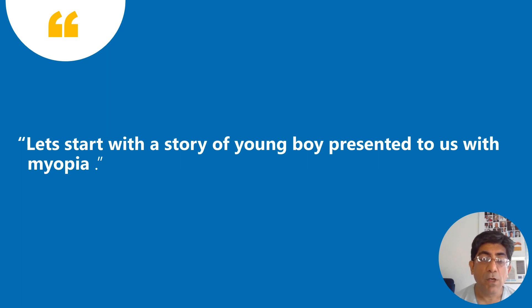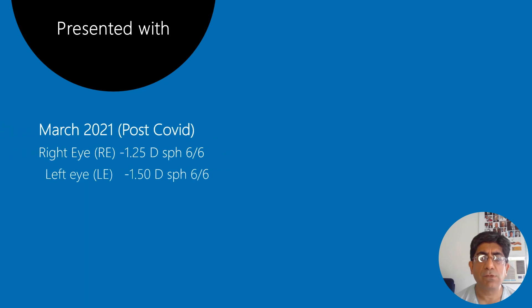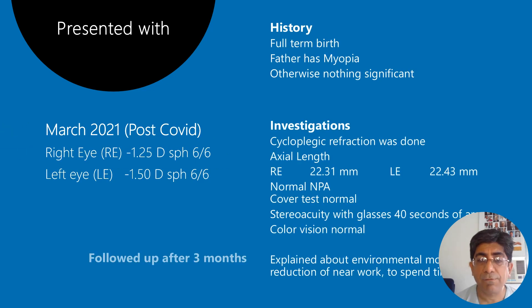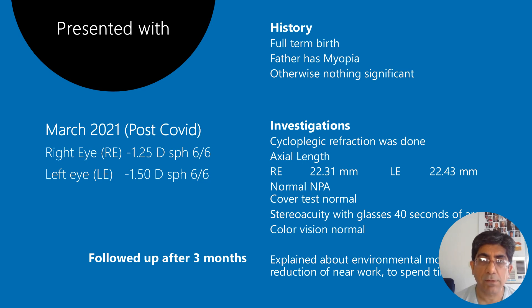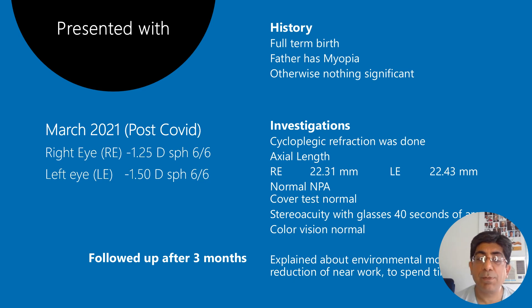Let us start with a story of a young boy who presented to us with myopia in 2021 post-COVID. A lot of children actually post-COVID came to us with myopia, probably because of near work, a lot of television watching, or because they were indoors and reading a lot. This patient presented with straightforward simple myopia of minus 1.25 and 1.5 diopters. The child was a full-term birth, and the father had myopia.